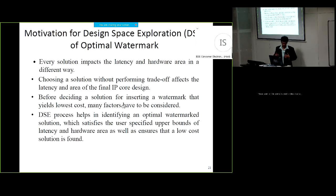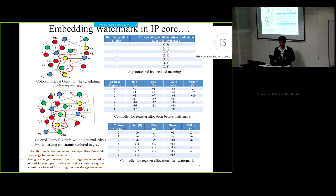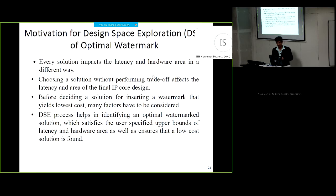Of course embedding a watermark with a small example is straightforward, but if you take an 80, 90, or 100 digit signature there could be a lot of storage register overhead on the design. Thus we need to optimize it. I will speak about design space exploration as a method of optimizing the number of resources for generating an optimal watermark.